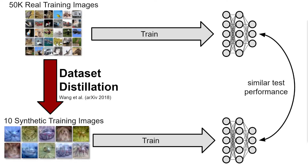Aside from simply training a model more efficiently, these synthetic images have applications in other areas such as dataset understanding, continual learning, neural architecture search, and even texture synthesis.